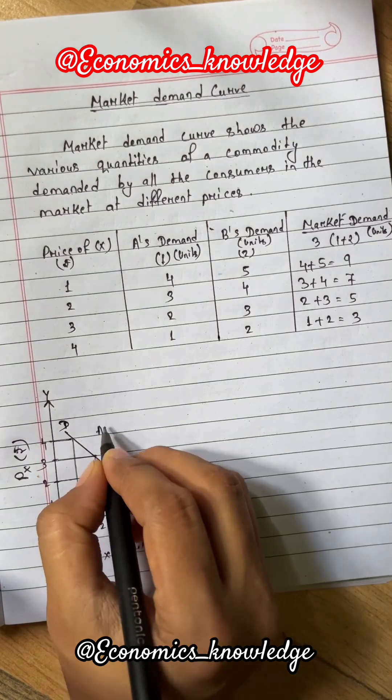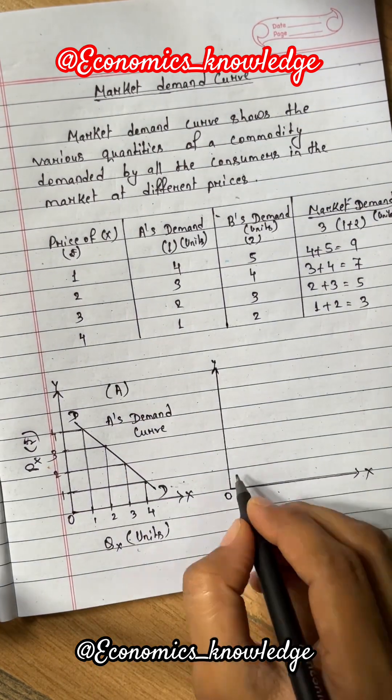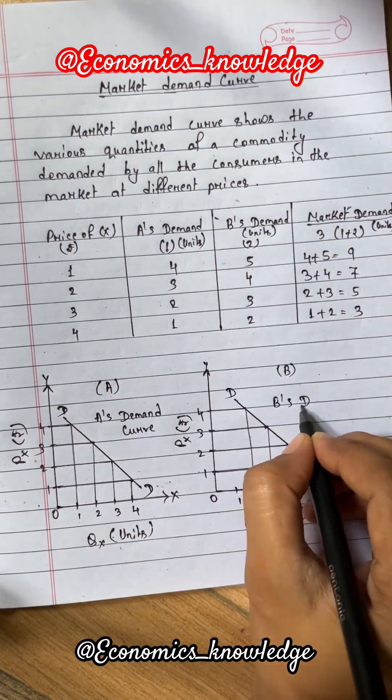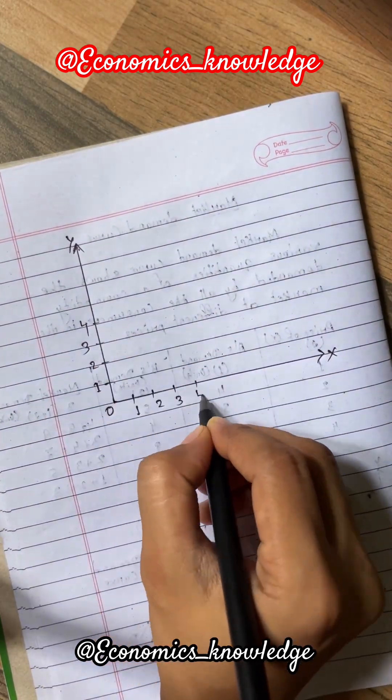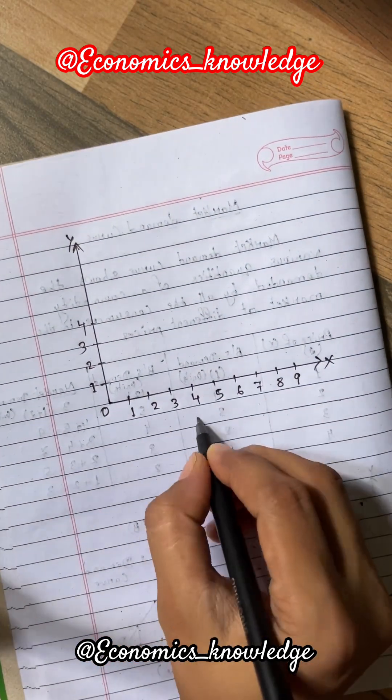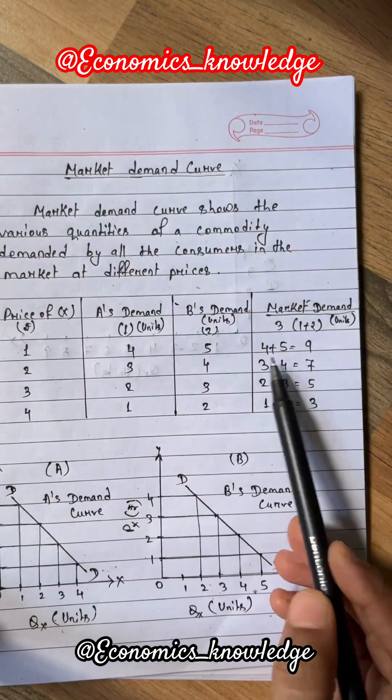Let's take the example of market demand schedule to draw a market demand curve. In figure A demand curve of A, in figure B demand curve of B, and in figure C market demand curve have been shown. On x-axis it is quantity and on y-axis it is price that has been shown in all the figures A, B and C.